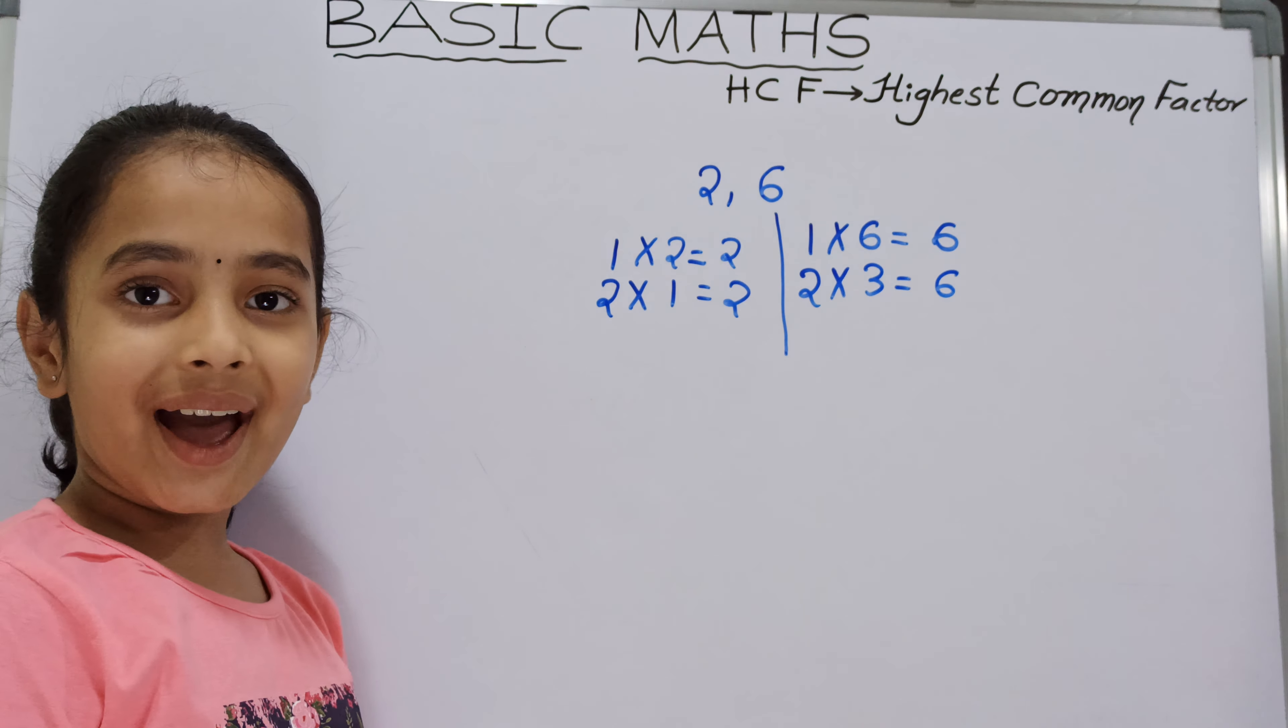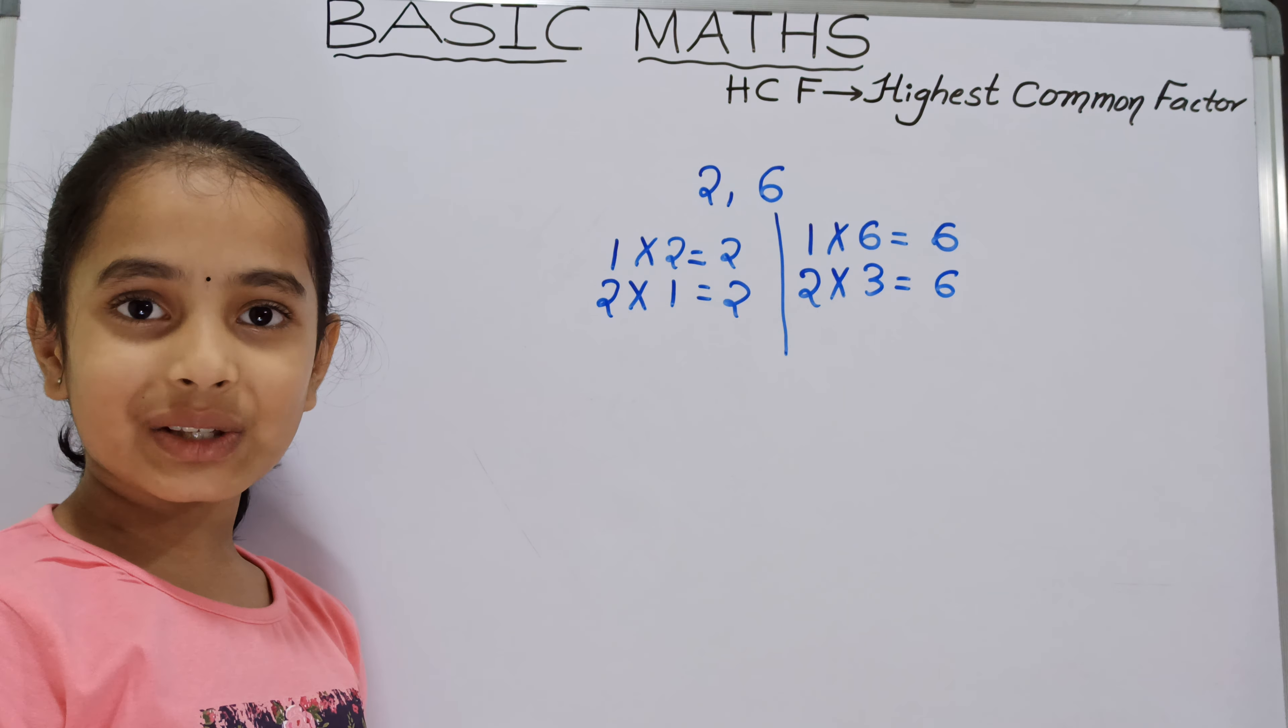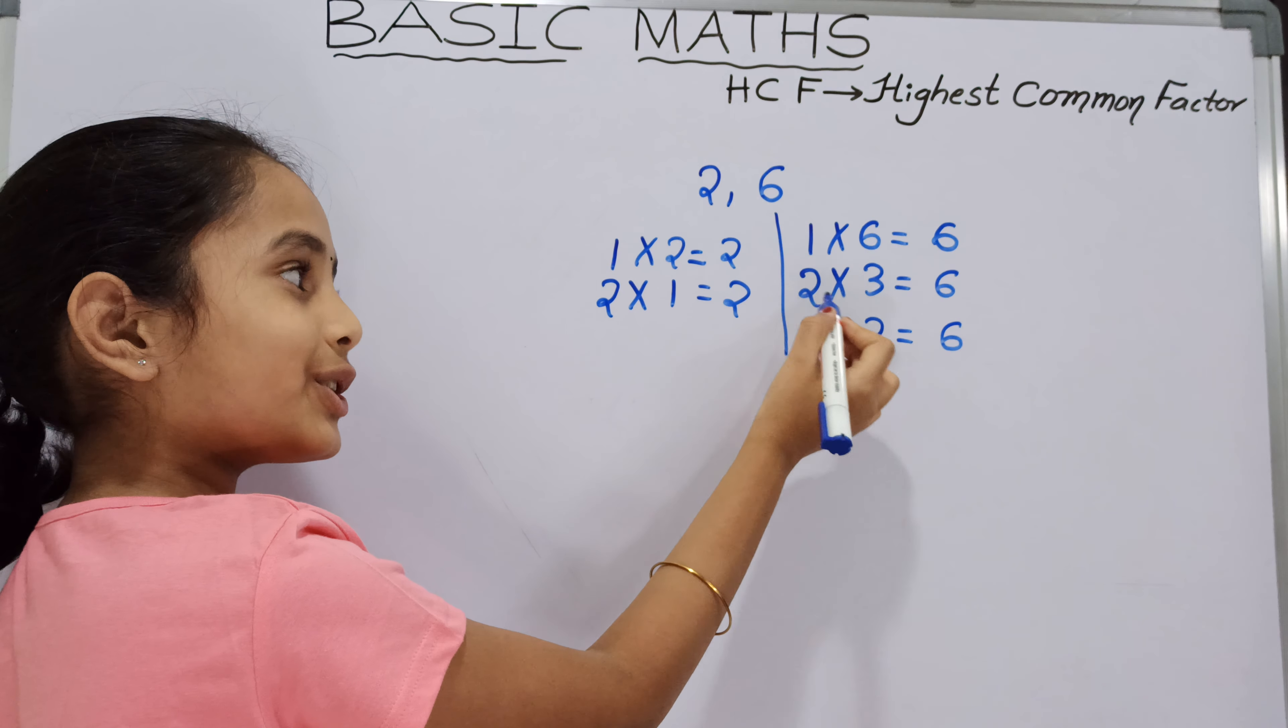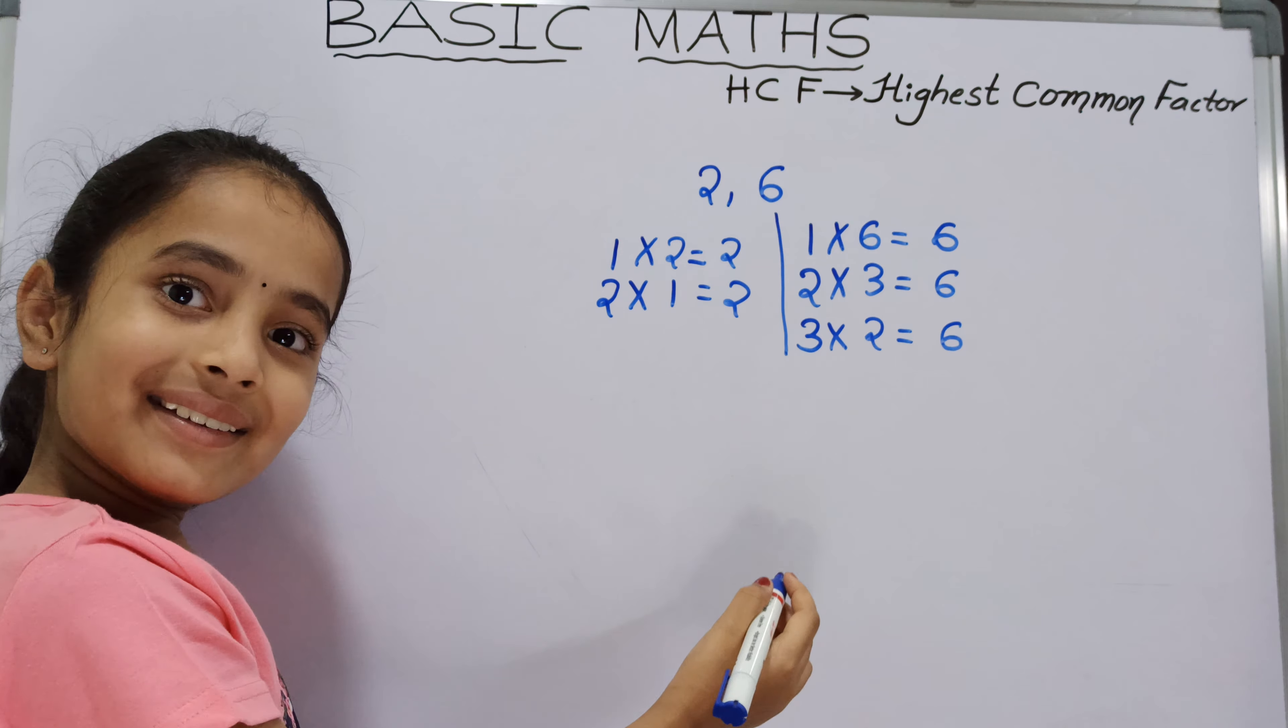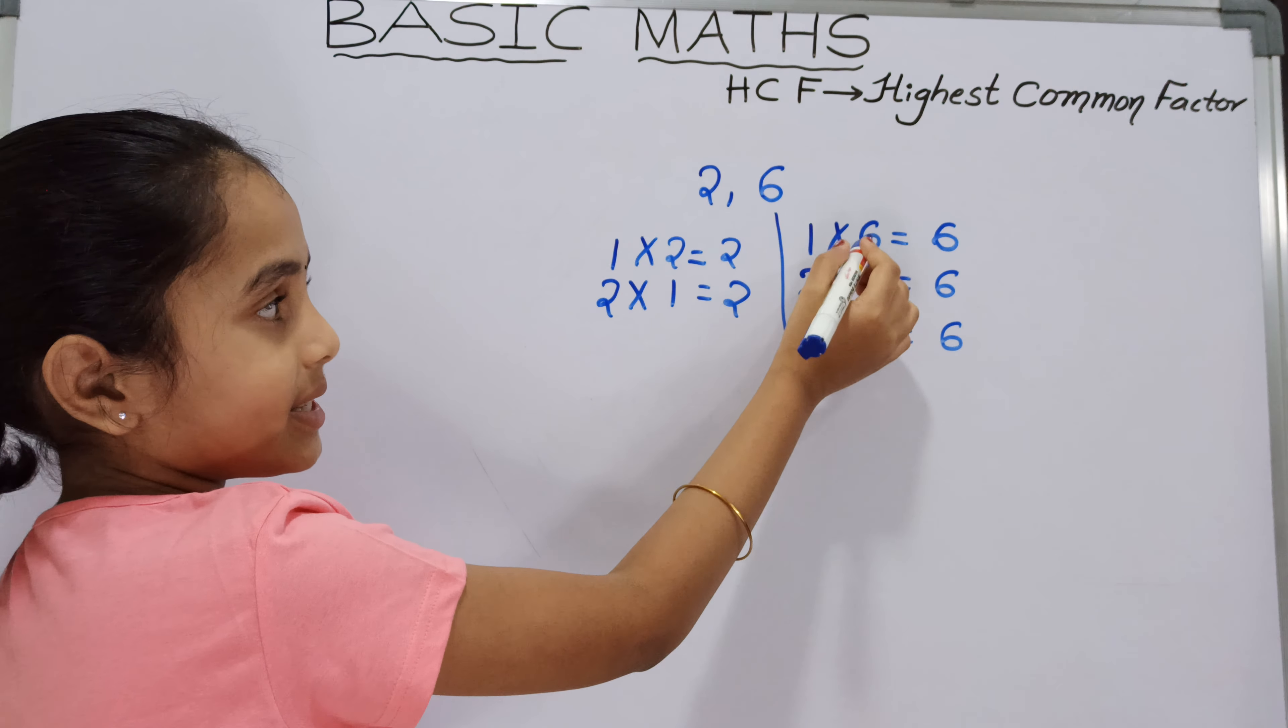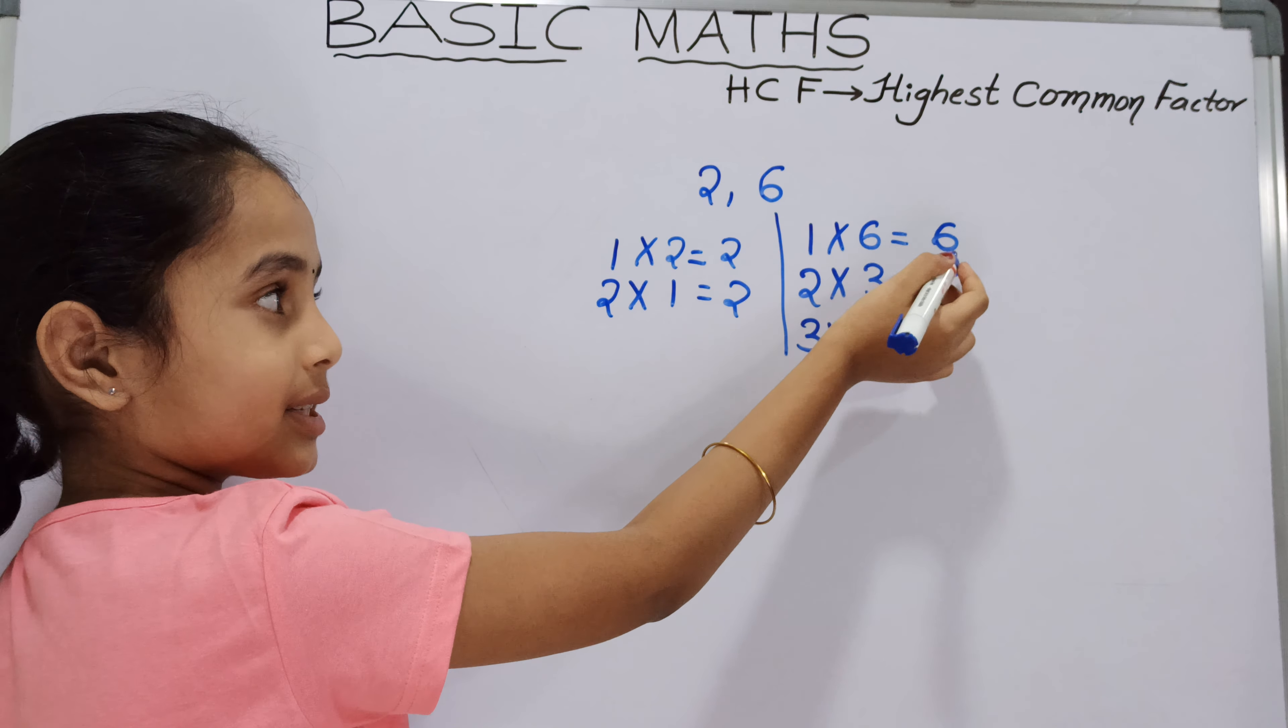Next, what is the number having the product as 6? 3 times 2 equals 6. So now we can see 3 and 2 matching oppositely. When it comes like this, we should write 6 times 1 equals 6.